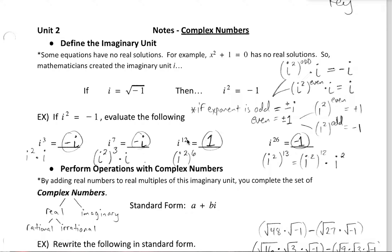Let's do some exponents with an even degree and see if we can find patterns there. i to the twelfth is the same as i squared six times. If I'm taking negative one times itself an even number of times, that gives me positive one. So maybe i to an even exponent is always positive one — but let's check. i to the twenty-sixth is i squared to the thirteenth power, or thirteen negative ones multiplied together. Negative one times itself an odd number of times gives negative one, so not all even-degree powers of i are positive one.